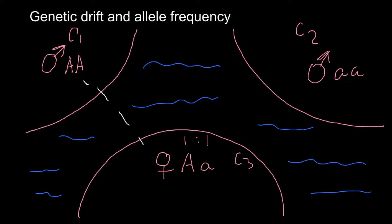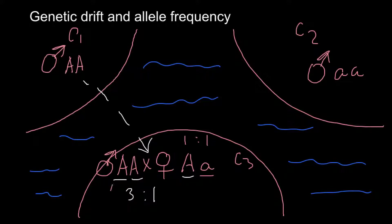Now imagine we have genetic drift in the form of migration — this male from community one migrates to community three's island. We now have this female and this male whose genotype is capital A capital A. If this couple mates, in the following generation we would have three dominant alleles and one recessive allele.